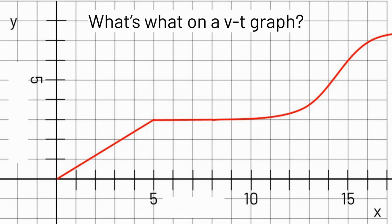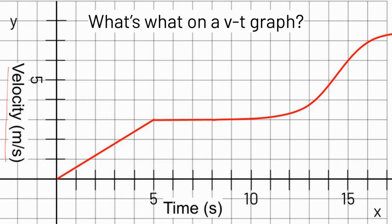So what's what on a velocity-time graph? Here on the y-axis we have velocity, and on the x-axis we have time. Where we have a non-zero constant slope on a velocity-time graph, that means that we have constant acceleration.